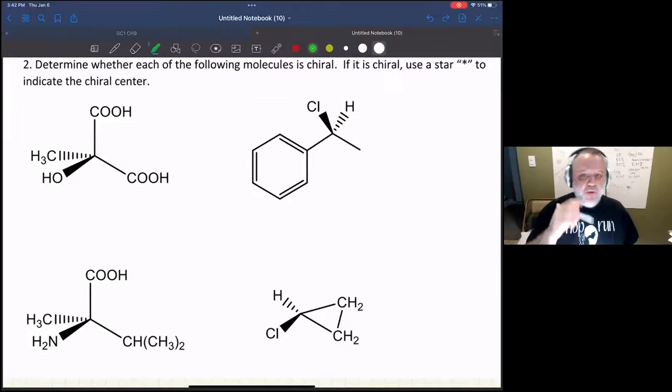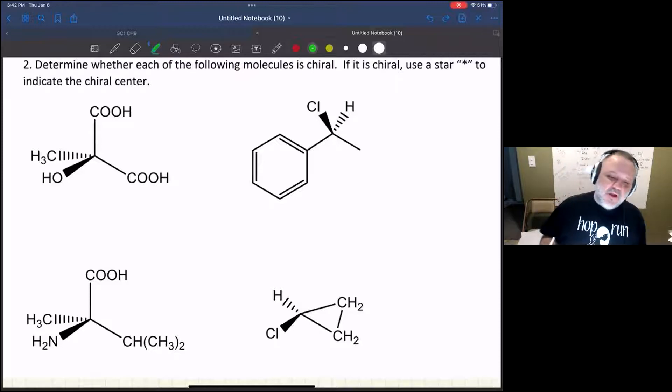This question is asking us about whether or not these molecules are chiral. In order to be a chiral molecule, you have to have a chiral center. A chiral center is a carbon that has four different groups attached to it.